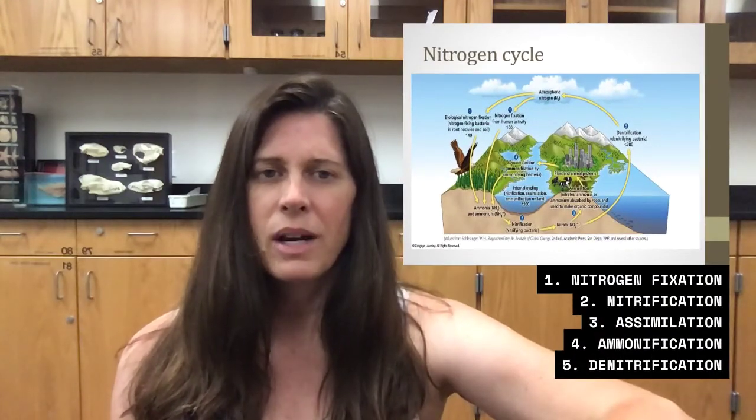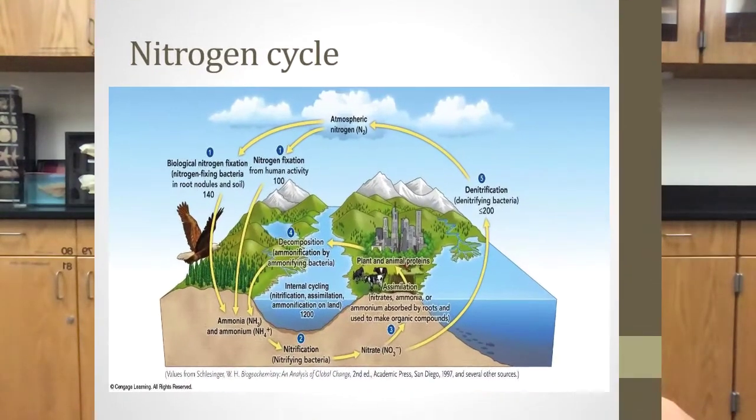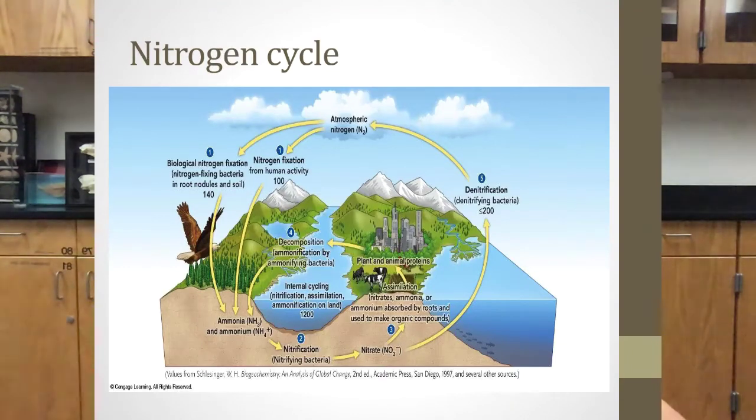So the next one I want to talk about is the nitrogen cycle. Nitrogen is a very essential part of proteins, nucleic acids, and chlorophyll, which is a substance found in plants, very important in absorbing the energy during photosynthesis. So it's really abundant in the Earth's atmosphere. It makes up about 78% of our atmosphere, but it's in the form of a very stable molecule, N2.